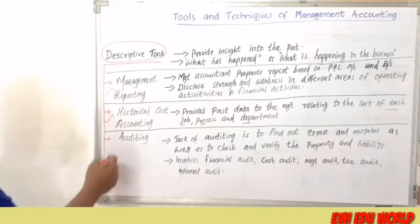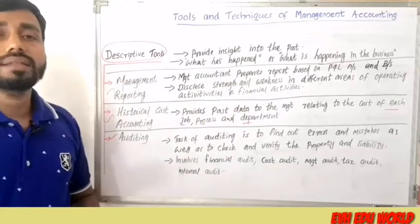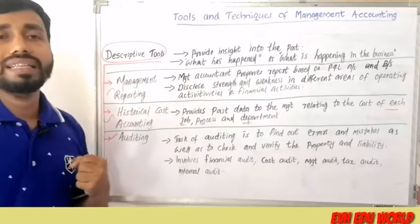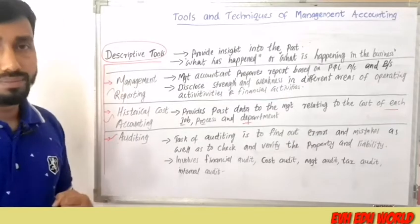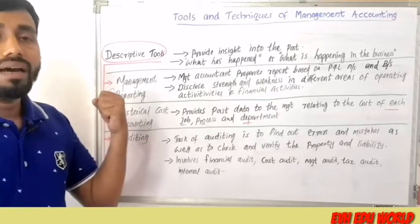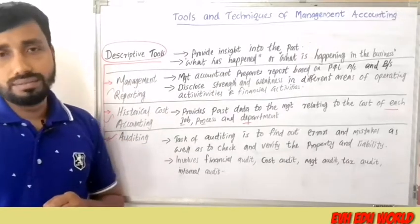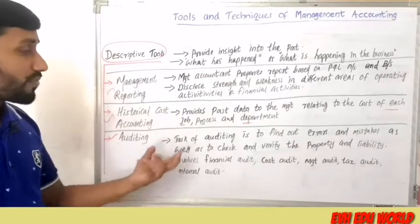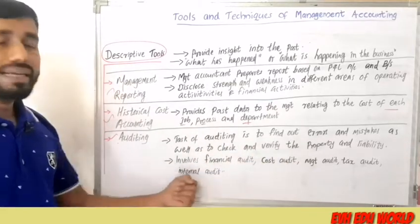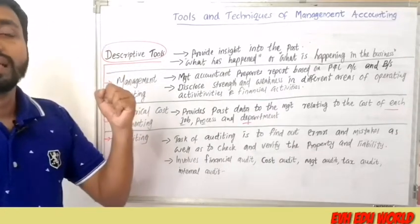The third descriptive tool is auditing, which involves identifying errors and mistakes in the accounts of an organization. Auditing may be financial audit, cost audit, management audit, tax audit, or internal audit.